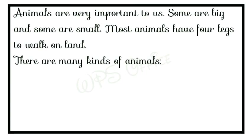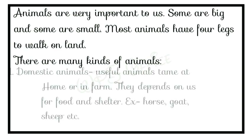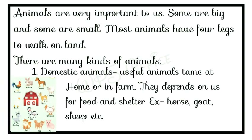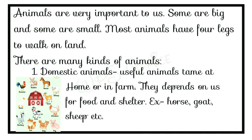Now we deal with animals first of all. Animals are very important to us — some are big and some are small. Most animals have four legs to walk on land. There are many kinds of animals, for example horse, goat, sheep, rabbit, donkey, cow, chicken. They depend on us for food and shelter.